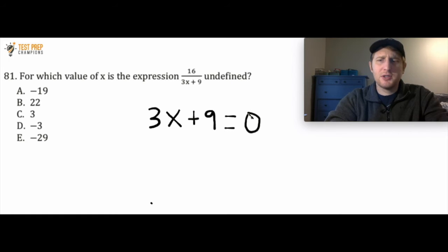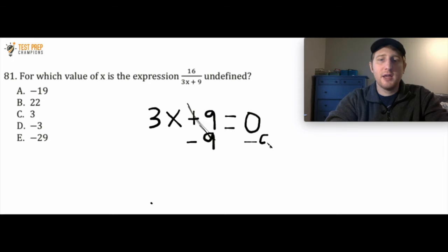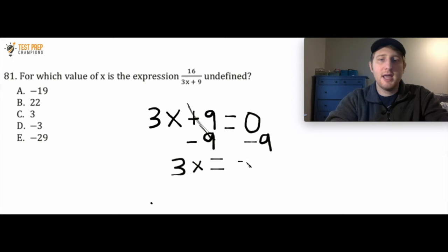You might be wondering what 'solve for x' means. It means we want to get x by itself on one side of the equation. So I have 3x + 9 = 0. The first move is I'm going to subtract 9. If I do minus 9, the 9s are going to cancel out. But whatever I do to one side, I also have to do to the other side. So I'm going to subtract 9 from the other side as well. If I rewrite this, I have 3x equals negative 9.